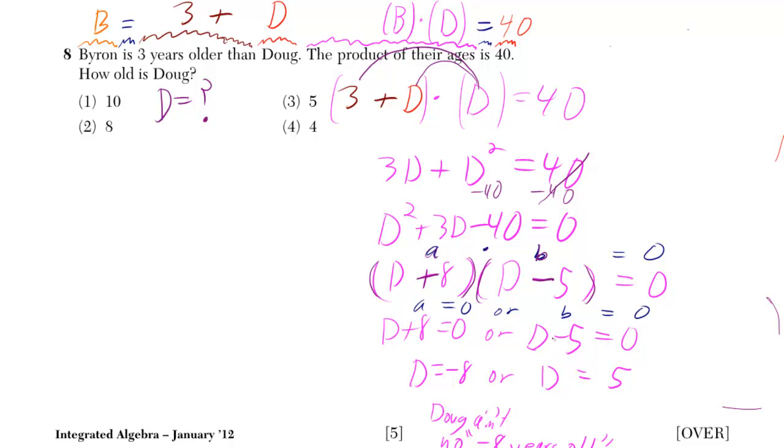Well, then you solve each of those for D, and on this one you get D is equal to negative 8, by subtracting 8 from both sides. On this one, you add 5 to both sides, and you get D is equal to 5.